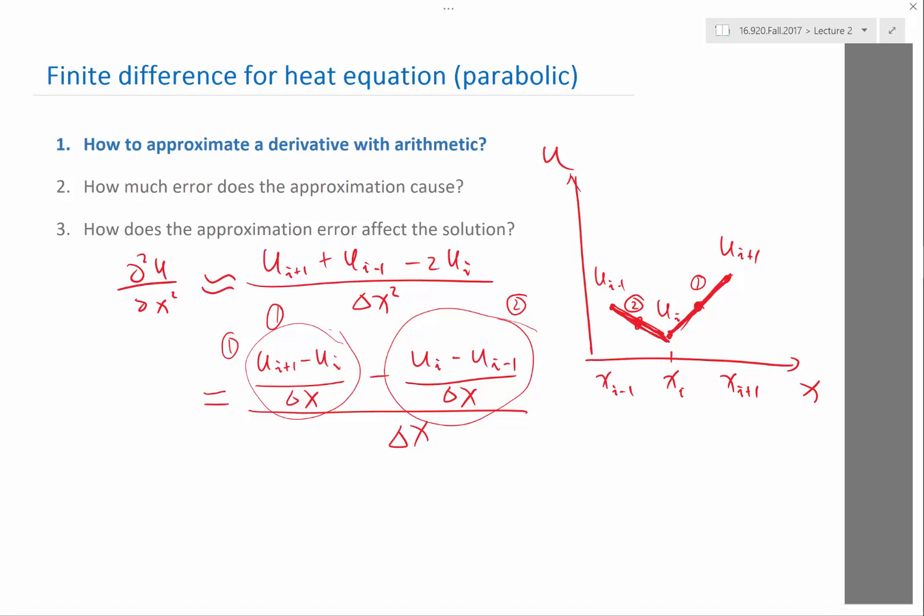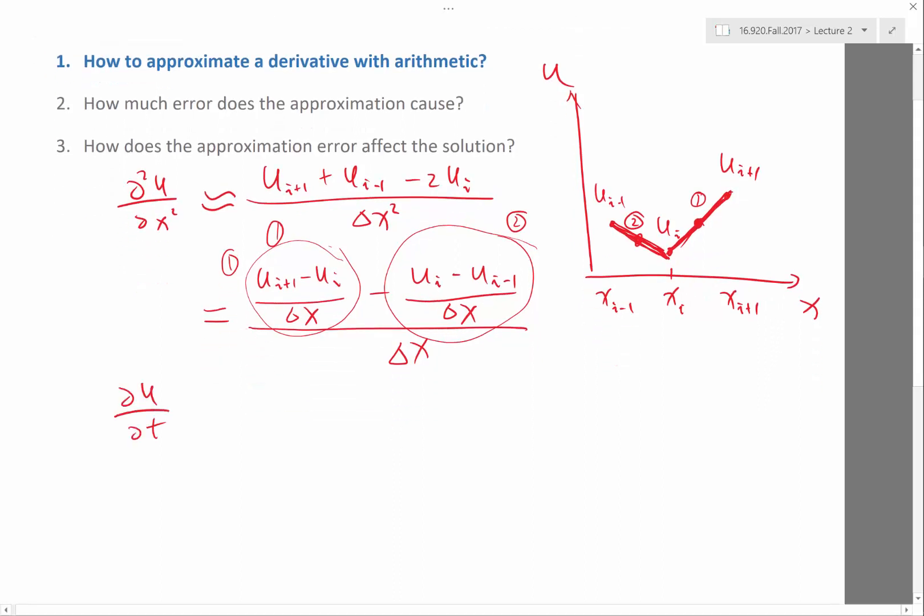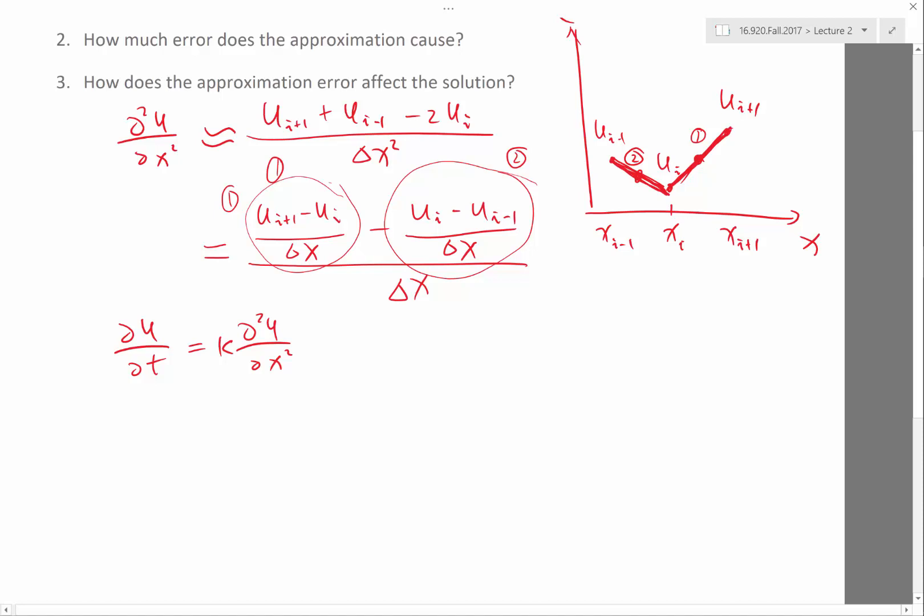Let's see how do we use that approximation of the derivative. Let's write down our differential equation. This is equal to kappa times this derivative, which now we approximate. So the derivative at x_i, which is du_i/dt, is equal to kappa times, now let's replace this with our newly derived finite difference approximation formula.